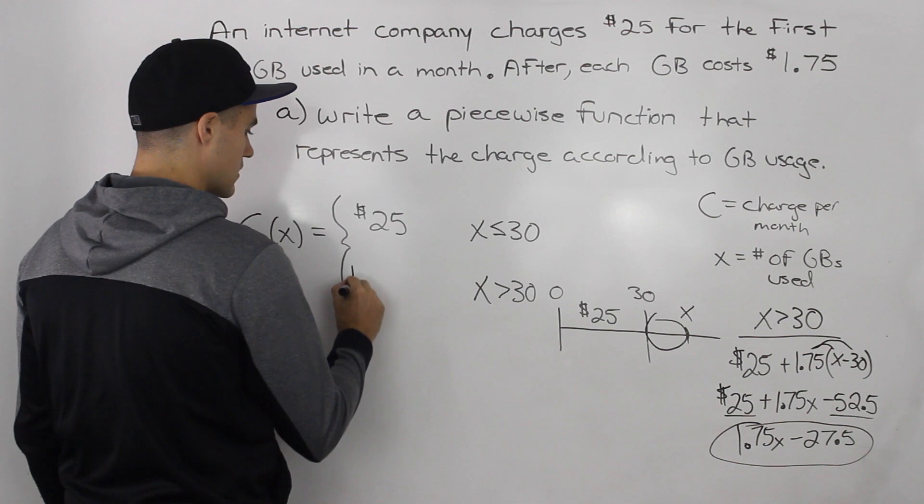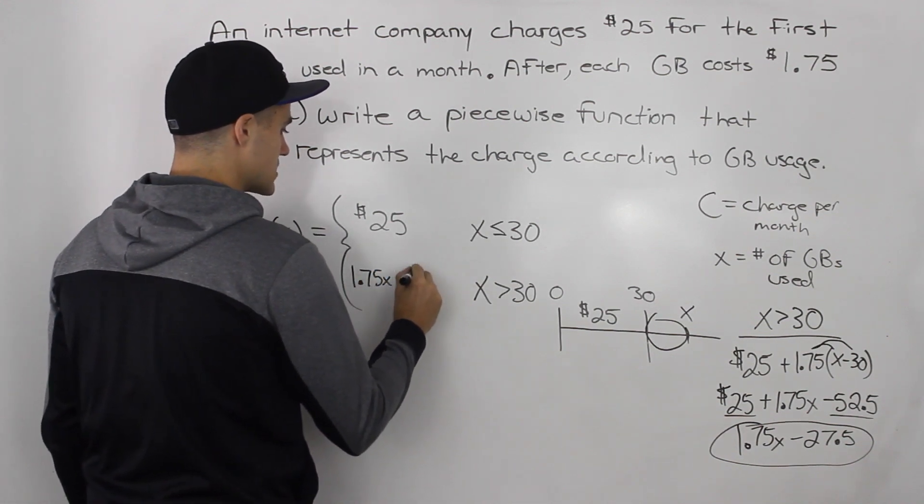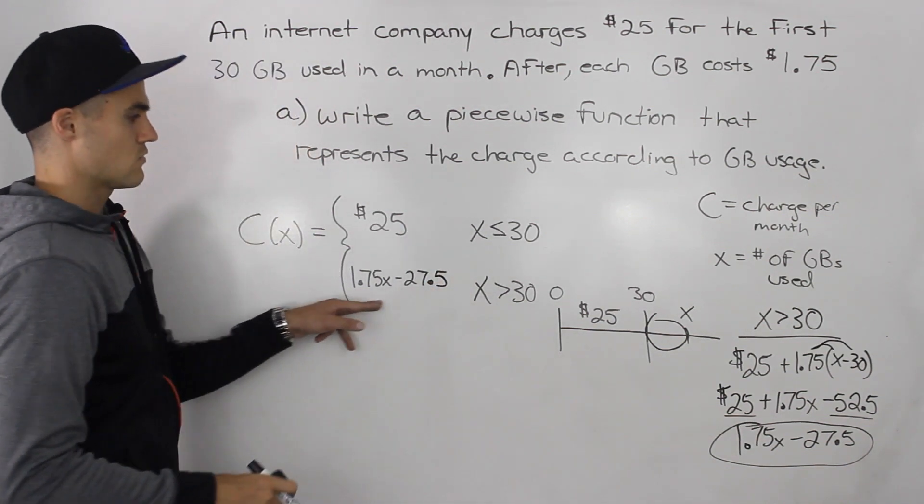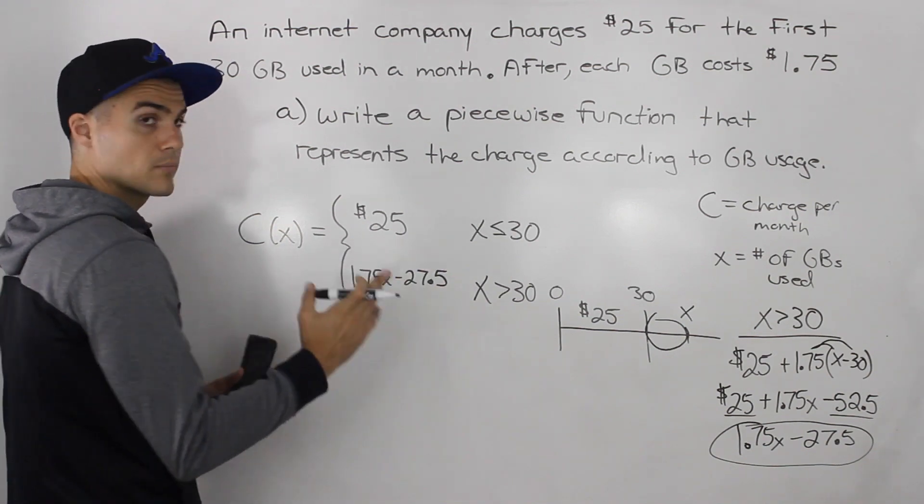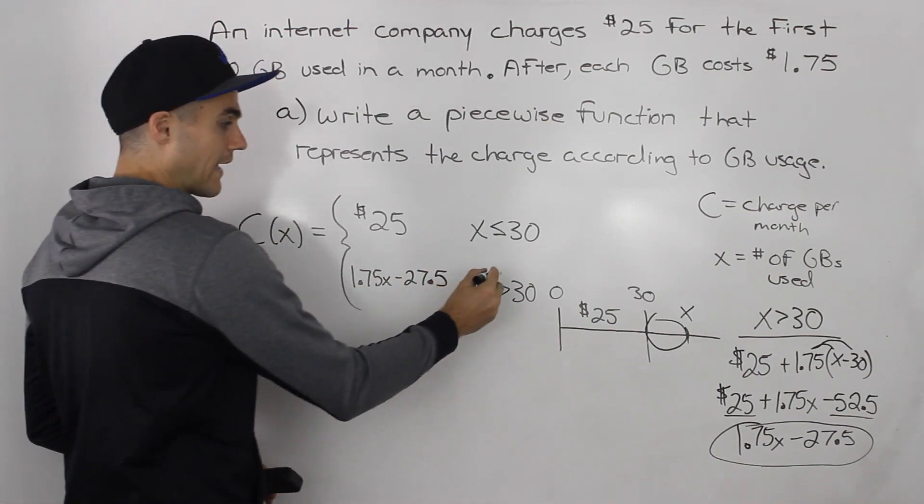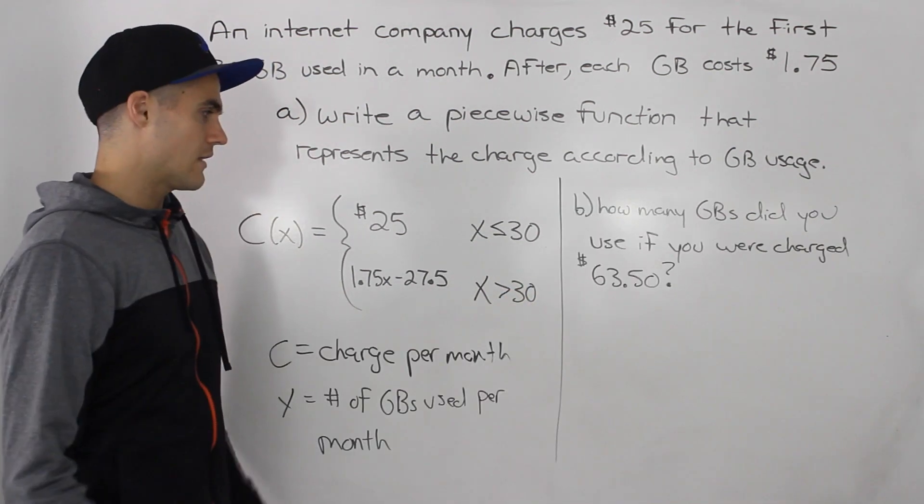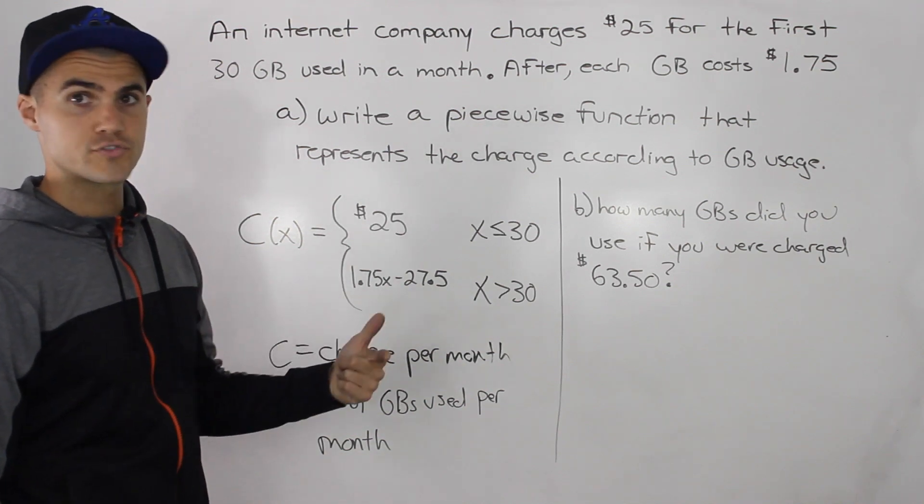So that there is the simplified function for this piece of the function. So it's going to be, you're going to be charged 1.75 X minus 27.5. So that there is the amount, total amount of the charge when your gigabyte usage is over 30 in the month. And now that we have this function for the charge, we can move to part B.